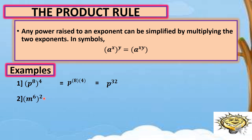Example number two, quantity m raised to 6 raised to 2. Same process — copy the variable and multiply the exponents. So 6 times 2 is equal to 12. Our final answer is m raised to 12.